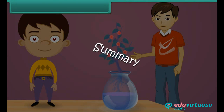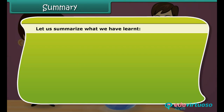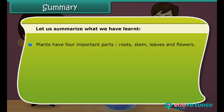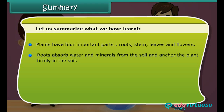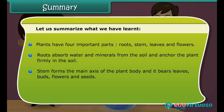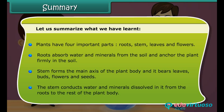Summary. Plants have four important parts: roots, stem, leaves, and flowers. Roots absorb water and minerals from the soil and anchor the plant firmly in the soil. The stem forms the main axis of the plant body and bears leaves, flowers, and seeds. The stem conducts water and minerals from the roots to the rest of the plant body.